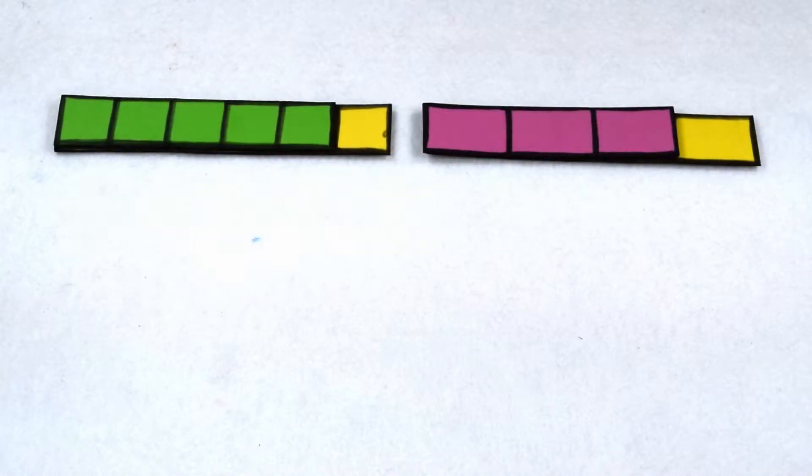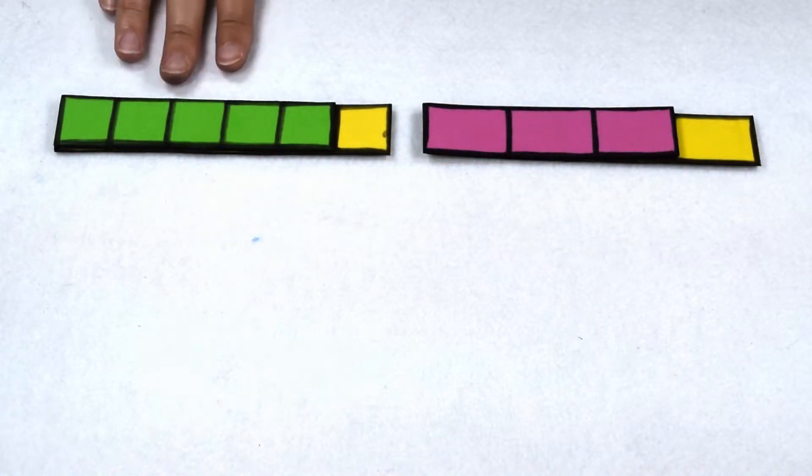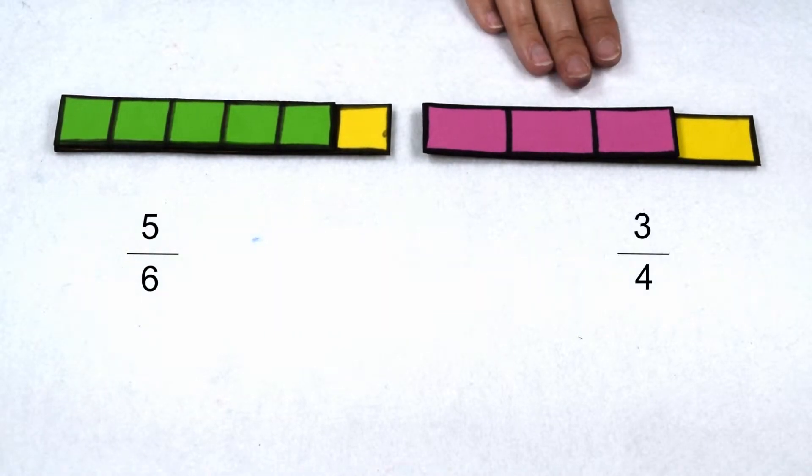We can also do the same thing for larger fractions. Here we have 5/6 compared to 3/4. Looking on our fraction bars, we can see that 5/6 and 3/4 are very similarly sized, so making equivalent fractions will allow us to more accurately compare them.